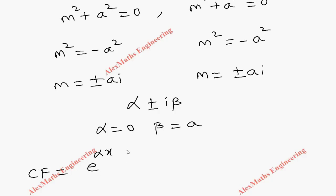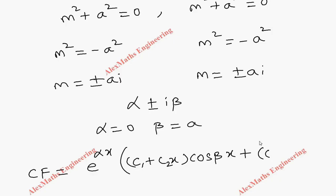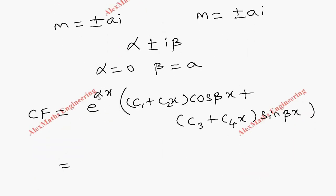The complementary function is e^(alpha·x) times — since we get two repeated roots instead of one constant, we write a linear function (c₁ + c₂x) cos(beta·x) plus (c₃ + c₄x) sin(beta·x). Substituting e^(0·x) = 1, so (c₁ + c₂x) cos...